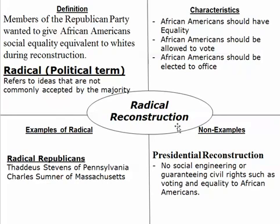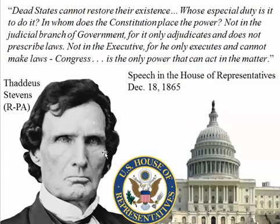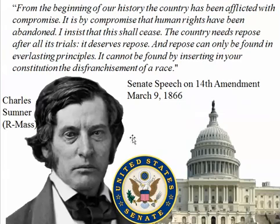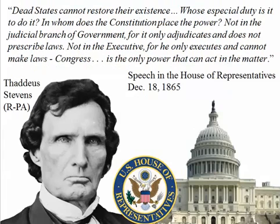Characteristics of these radical political thoughts are: African Americans should have equality, they should be allowed to vote, they should be elected to office — things they had not done so far. Radical Republicans during Radical Reconstruction wanted to extend civil liberties and rights to African Americans and make them equivalent to whites. Examples of Radical Republicans include Thaddeus Stevens of Pennsylvania, who was in the House of Representatives, and Charles Sumner of Massachusetts, who was a senator.